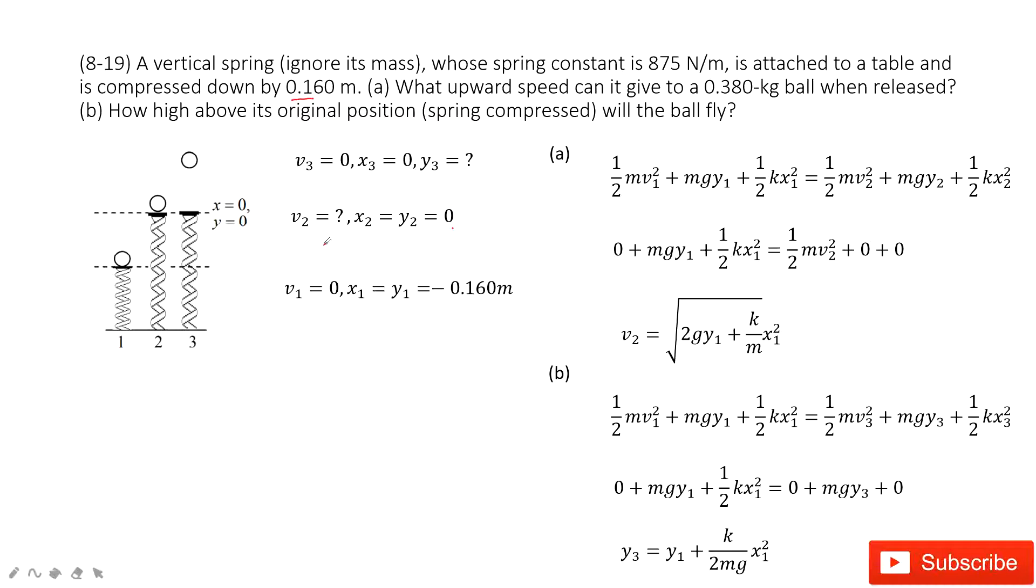First of all, we need to find v2. How can we do that? We can say the energy at position one equals the energy at position two. At position one, we have the kinetic energy, gravity potential energy, and also elastic potential energy.